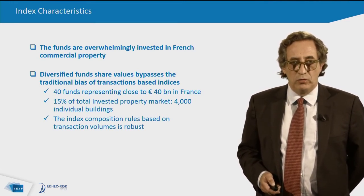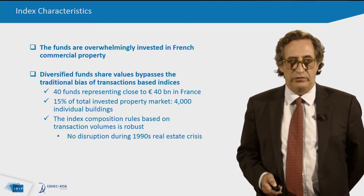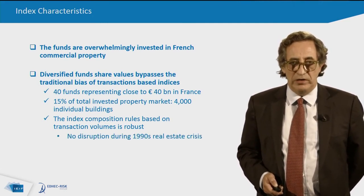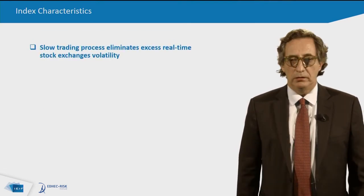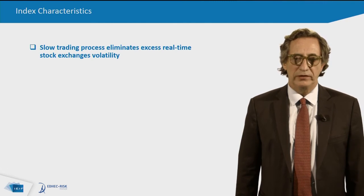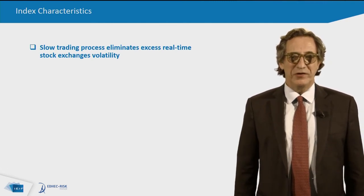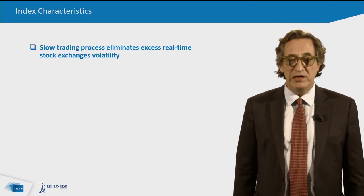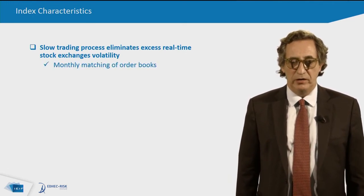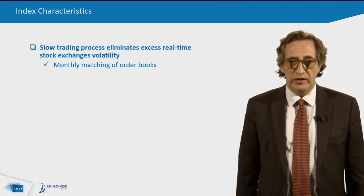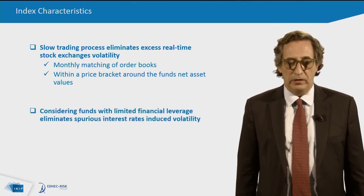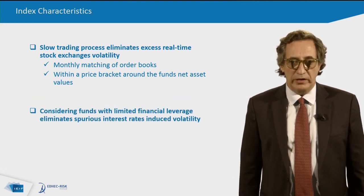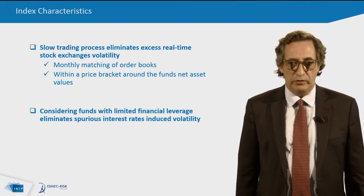The index composition rules based on transaction values is robust. In fact, during the 1990 real estate crisis, there were no disruptions in the composition of the index. Another advantage is capturing the right volatility of the property market. Slow trading process eliminates excess real-time stock exchange volatility. The market is organized through a monthly matching of all the books within a price bracket around the funds' net asset values. Considering funds with limited financial leverage also eliminates spurious interest rate-induced volatility.